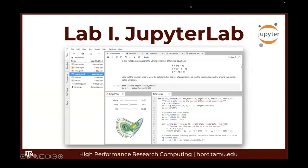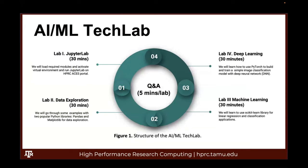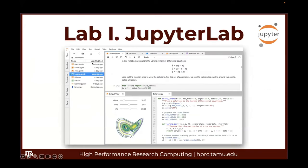This is the JupyterLab interface. Some of you may have used JupyterLab before, and some may not. On the left side panel, you can see a file browser with some files. If you double-click on a file, it will open a tablet view in the main working area. We can open a Jupyter notebook, a terminal, a console, or other files as well.